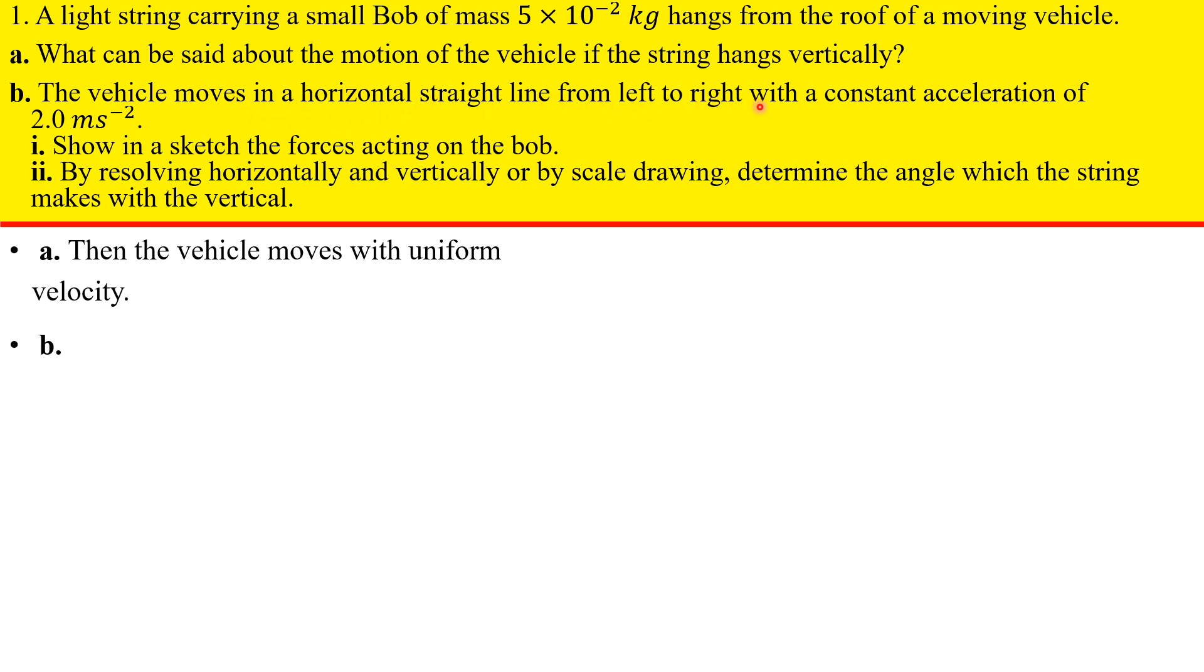Part B: The vehicle moves in a horizontal straight line from left to right with a constant acceleration of two meters per second squared. Show in a sketch the forces acting on the bob. In this case, the vehicle now has a resulting force acting on it because there's a resulting acceleration. According to Newton's second law, whenever you have a resulting acceleration on that system, there is a consequential resulting force. The bob is going to experience a backward force on it, so it's going to drift backwards.